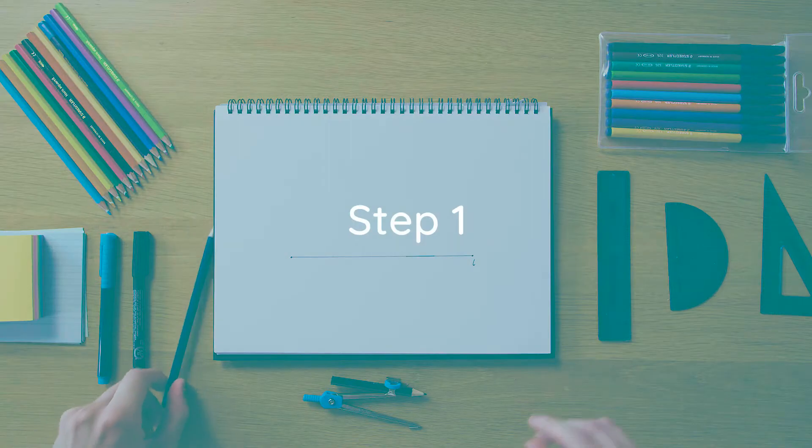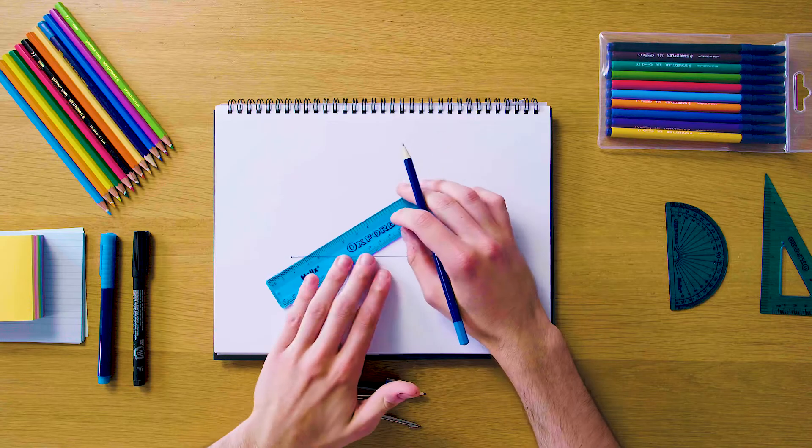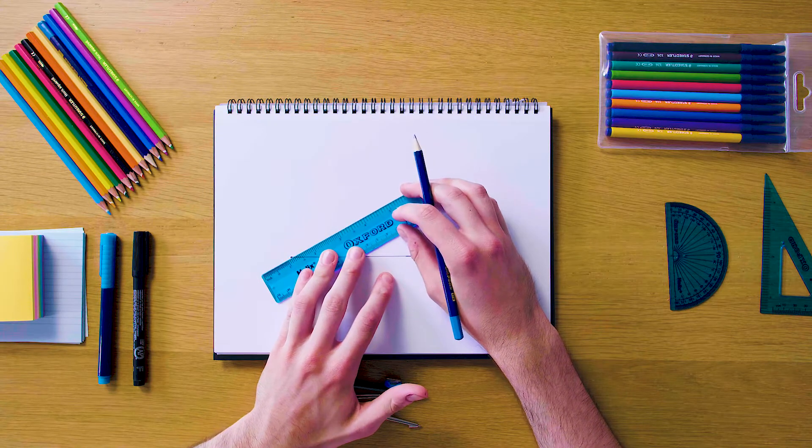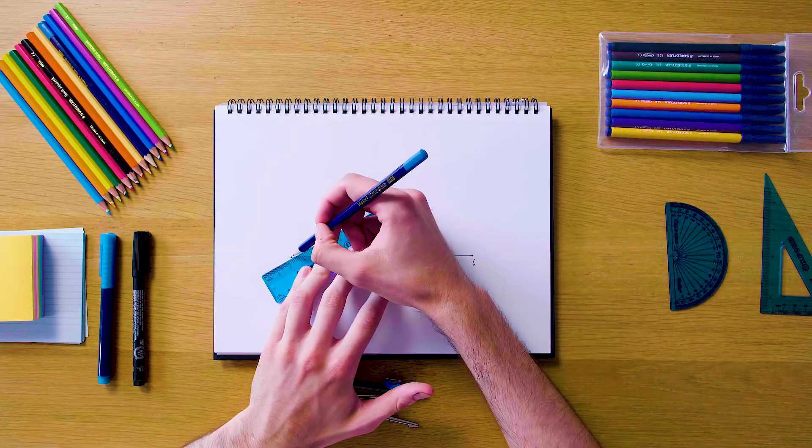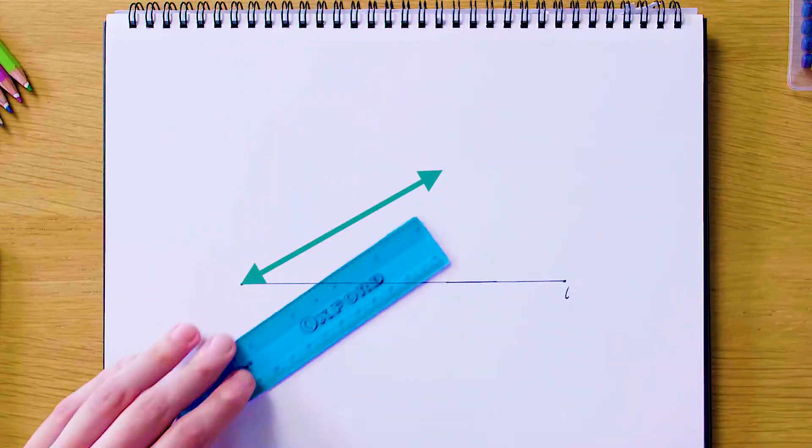So our first step is going to be to draw a line somewhere up above L. Just pick an angle—I usually like to make mine about 45 degrees because it's kind of a habit of mine and it usually comes out looking pretty nice, but again, this can be whatever you want it to be.